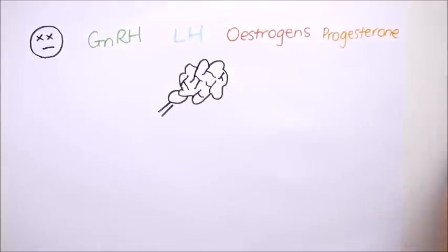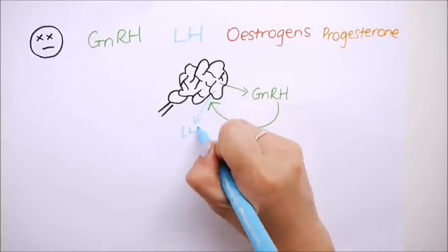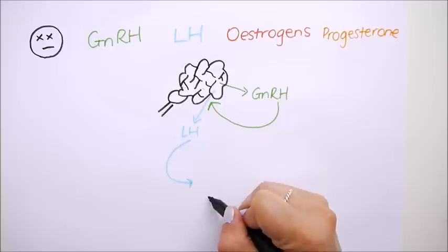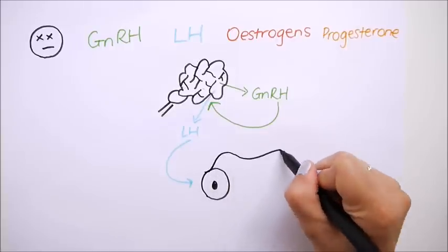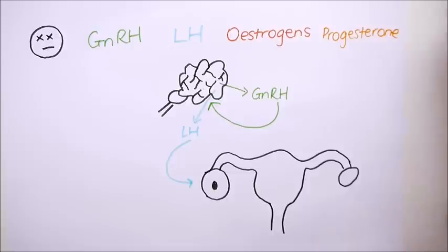Once this happens, gonadotropin releasing hormone is released from the brain which makes luteinising hormone be released from a different part of the brain. These hormones affect the ovaries where an ovum or egg develops and the ovaries release oestrogen and progesterone.